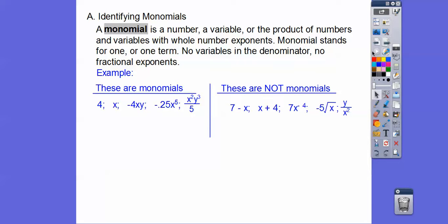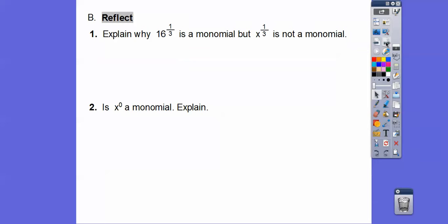These are not monomials. This is called a binomial — we'll talk about it in just a minute. This is another binomial; bi means two. This is not even a polynomial. This is not a monomial because that's a negative exponent, which would put it in the denominator — you cannot have variables in the denominator. This is x to the one-half, so it's a fractional exponent. When you have a square root, it's like to the one-half, so it's not a monomial.